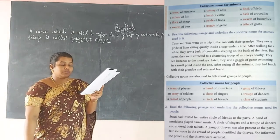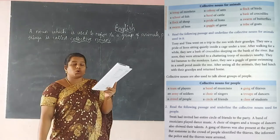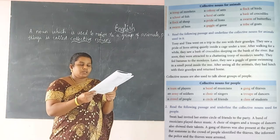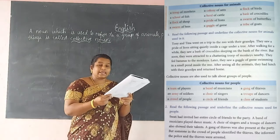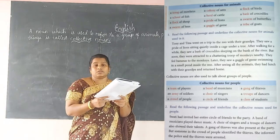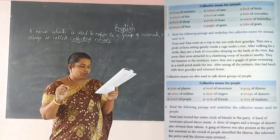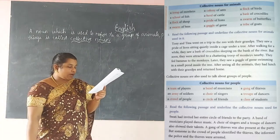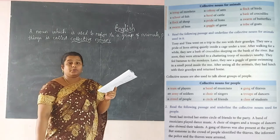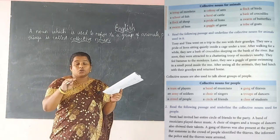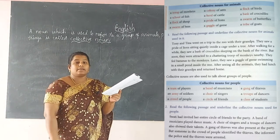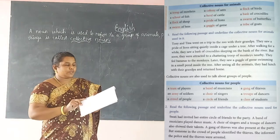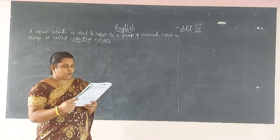A gang of thieves was also present at the party — underline the word 'gang.' But someone in the crowd of people — people in a group means we say 'crowd,' so underline 'crowd.'